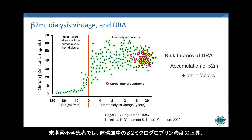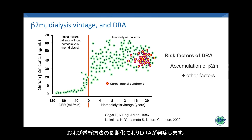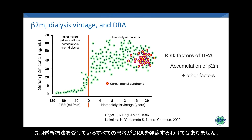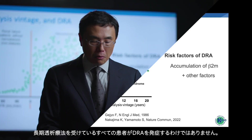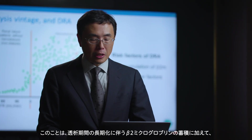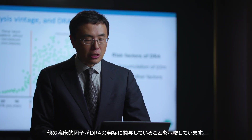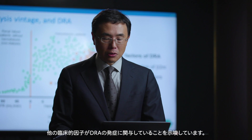In patients with end-stage kidney disease, circulating beta-2-m levels increase, and long-term dialysis treatment can lead to DRA. However, not all patients with high serum levels of beta-2-m and long-term dialysis treatment develop DRA. This suggests that other clinical factors play a role in the development of DRA, in addition to the accumulation of beta-2-m with long-term dialysis treatment.